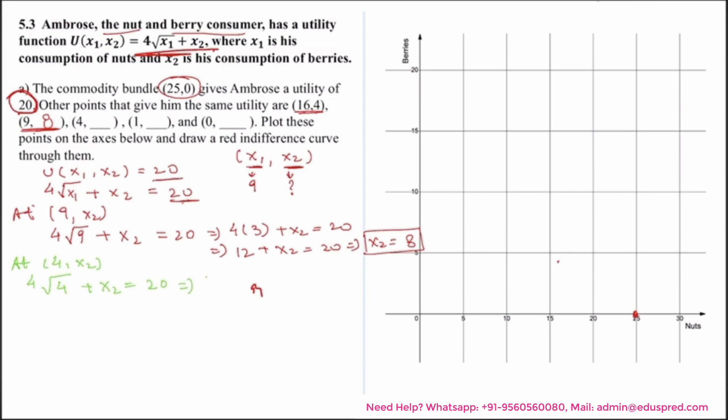So this implies 4 multiplied by 2 plus x2 is equal to 20. That is nothing but 8 plus x2 is equal to 20, or x2 is equal to 12. So here x2 is taking the value of 12. Now let's move on to the next point which is at (1, x2). That would be 4 square root of 1, as x1 is taking the value of 1, plus x2 is equal to 20. This implies 4 plus x2 is equal to 20. This gives x2 is equal to 16. So your point becomes (1, 16).